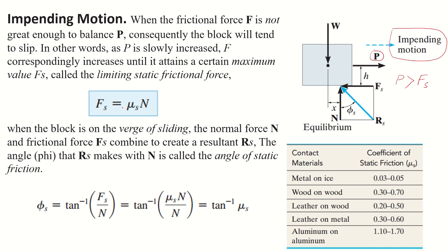Mu-s is the coefficient of static friction and N is the normal reaction force, which is equal and opposite to the weight of the block. The resultant R is the resultant of the frictional force and normal force.